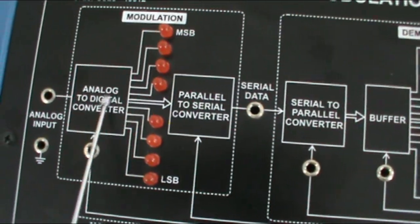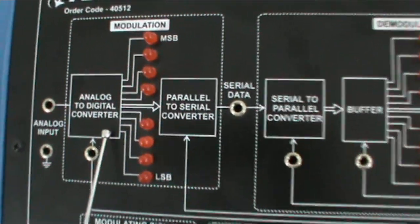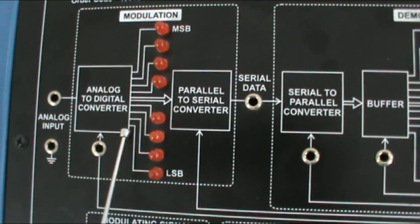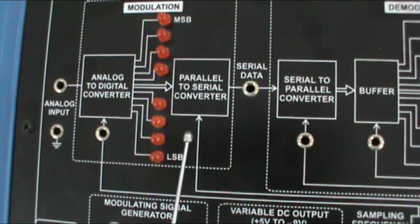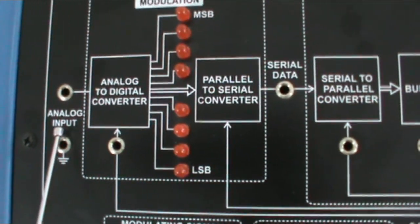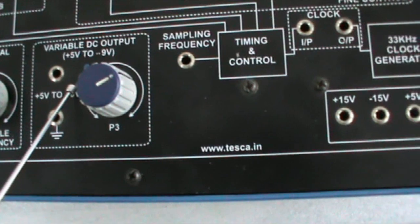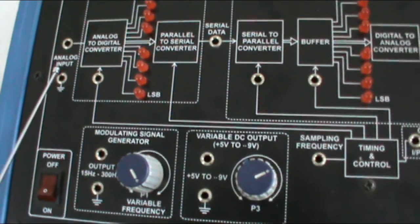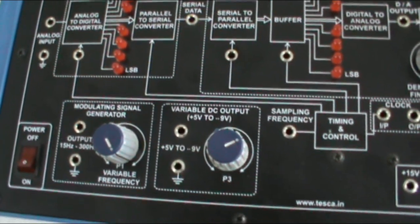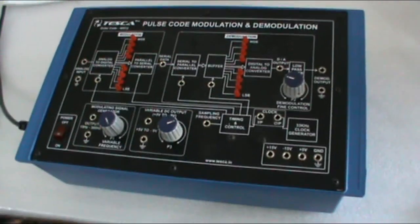This is the modulation section, and this is the analog to digital converter section. When the signal is converted into digital form, a binary word is indicated by these LEDs. These terminals are the analog input terminals. You can connect the signal from the modulating signal generator or variable DC output section to these analog inputs. These terminals are for the input of the modulation section.